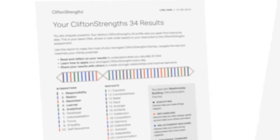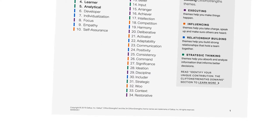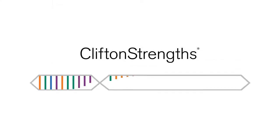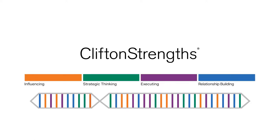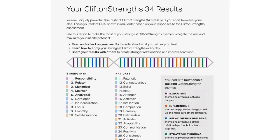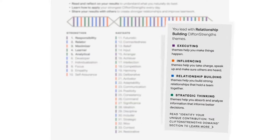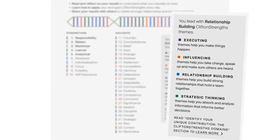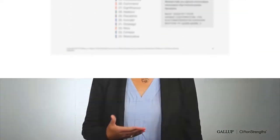Your personalized report begins with your rank order of all 34 themes. This is your talent DNA — it's completely unique to you. The colors throughout your DNA strand represent the four domains of CliftonStrengths. These domains explain how each of the themes help you contribute when you join, create, or lead a team. Now let's take a closer look at your report.